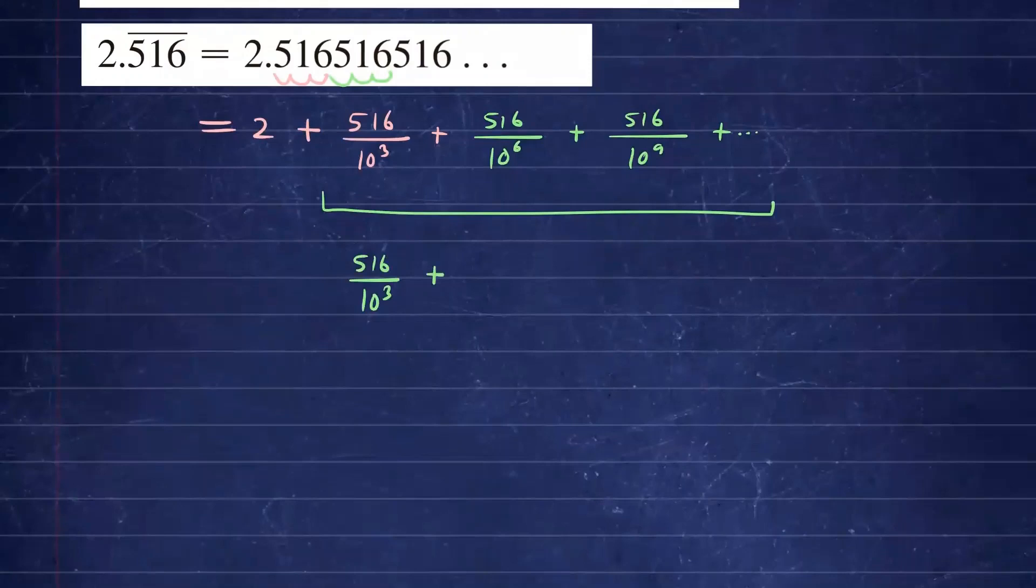What we have to do is take that term 516 and multiply by 1 over 10 to the 3rd power. And if you multiply by 1 over 10 to the 3rd power, you're going to get this term right here because you'll have 516 over 10 to the 6th power and so on.